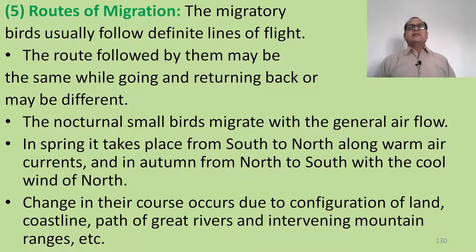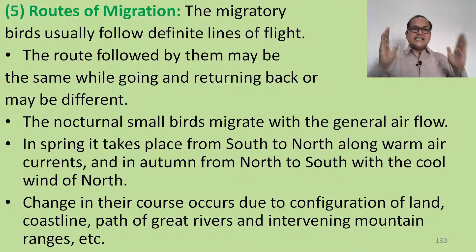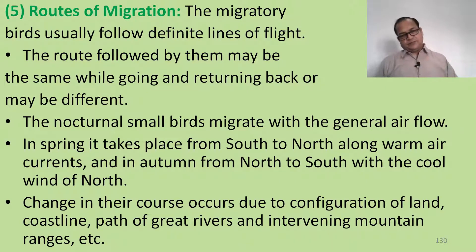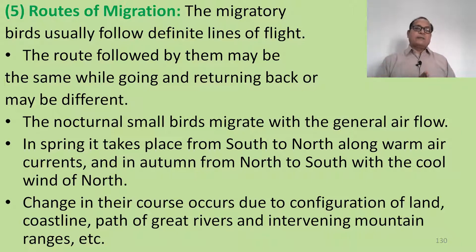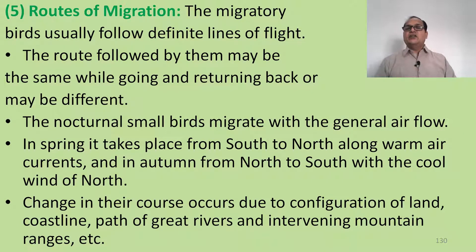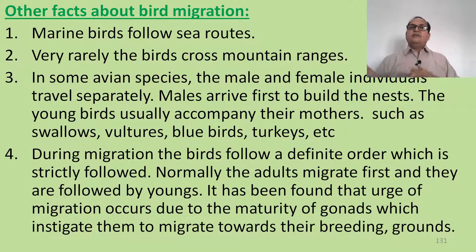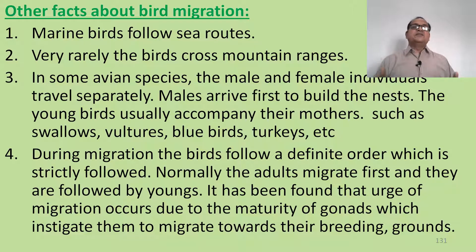Regarding routes, migratory birds usually follow a definite line of flight. The route followed may be the same going and returning, or may be different. Nocturnal small birds migrate with the general airflow — in spring from south to north along warm air currents, and in autumn from north to south with the cool winds. Changes in their course occur due to the configuration of land, coastline, great rivers, and intervening mountain ranges. Marine birds follow the sea route during migration. Very rarely do birds cross mountain ranges. In some avian species, male and female individuals travel separately, with males arriving first to build the nest.